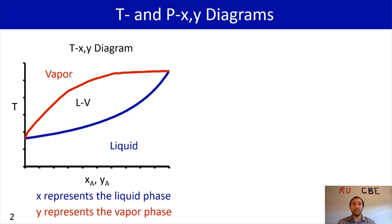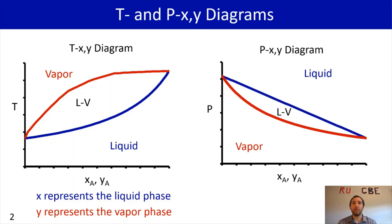This is a TXY diagram, and similarly we can have a PXY diagram where instead of T on the y-axis, we have P on the y-axis. The phases are flipped, so now you have liquid on the top and vapor on the bottom. That's because at low pressures we're going to have a vapor, and as you continuously increase pressure, eventually you're going to have a liquid. That intermediate region between the two curves is going to be your liquid-vapor region.